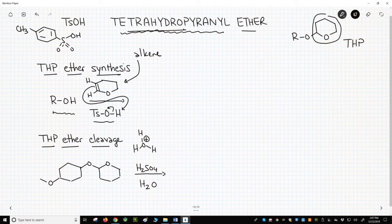Alkenes are protonated to give the more stable carbocation. In the case of dihydropyrane, it will protonate the carbon away from the oxygen.